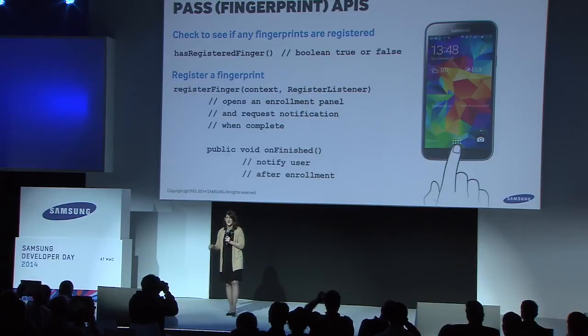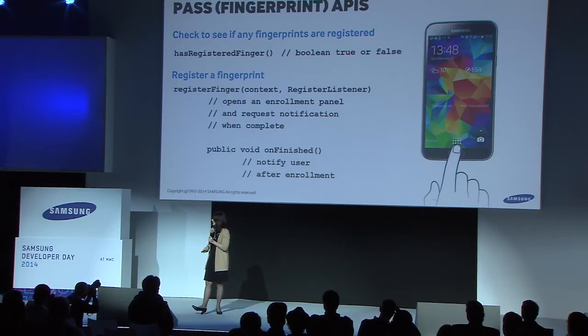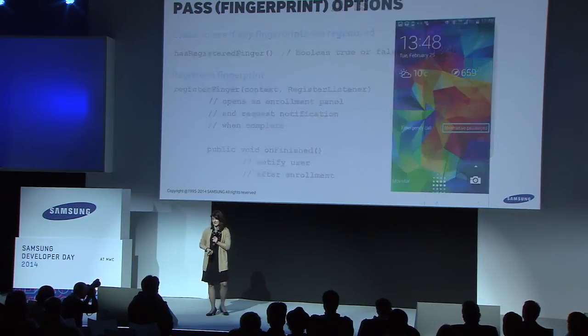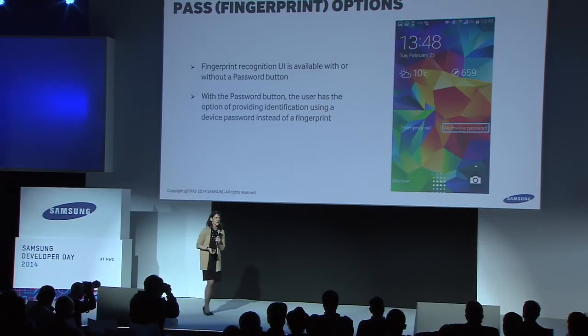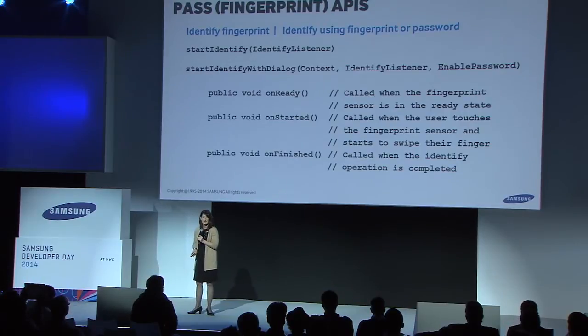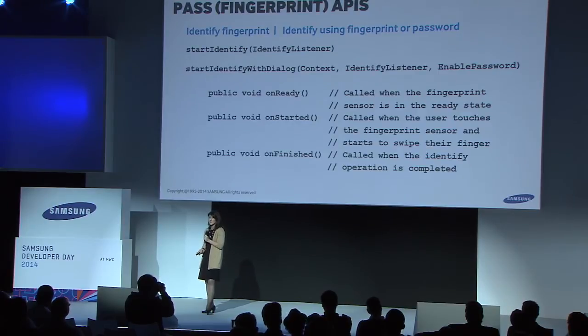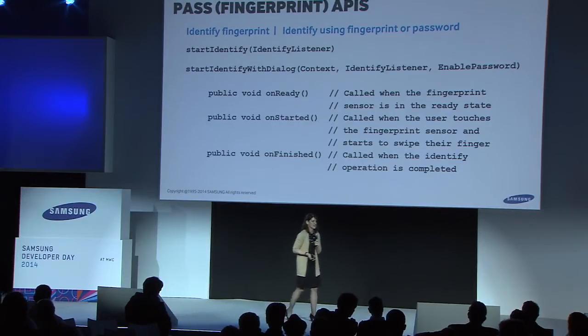This is the call to check to see if this device has any registered fingerprints at all — you want to know if your user has even taken that step. If they haven't, you can automatically call register finger and it will open an enrollment panel that lets them scan their fingerprint in. You don't have to limit them to only fingerprint recognition; you can give them the option of entering a password as well. You start the identification with a call to start identity or start identity with dialogue. There is a listener that you register for fingerprint identity with a series of callbacks that will either succeed or fail.